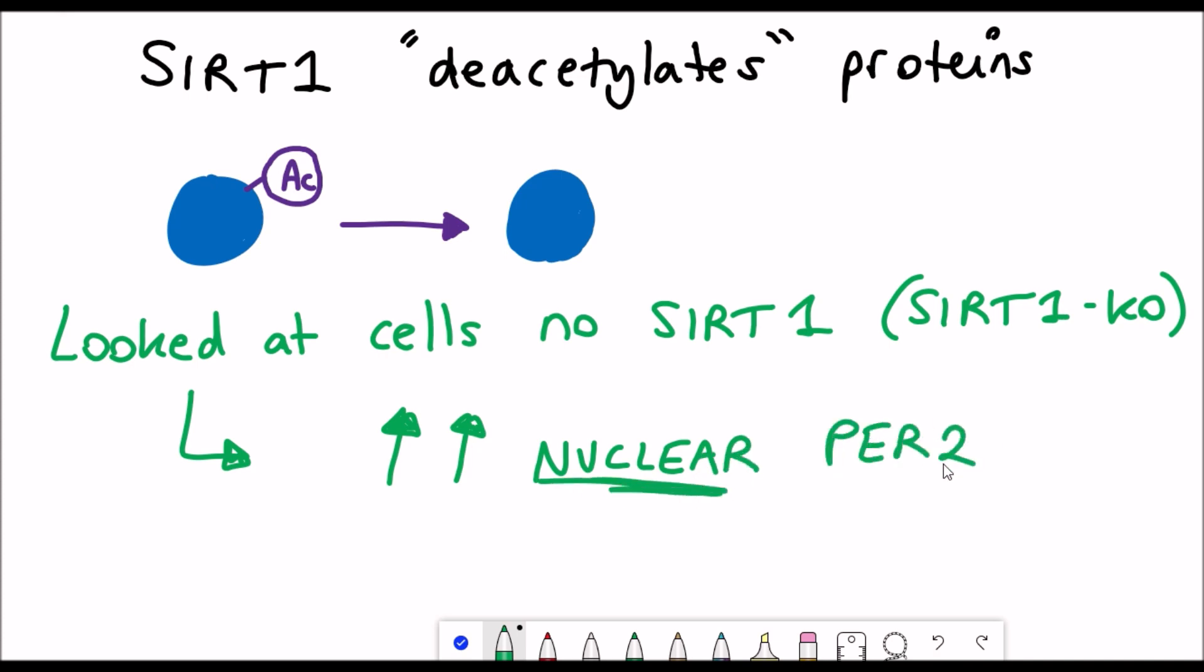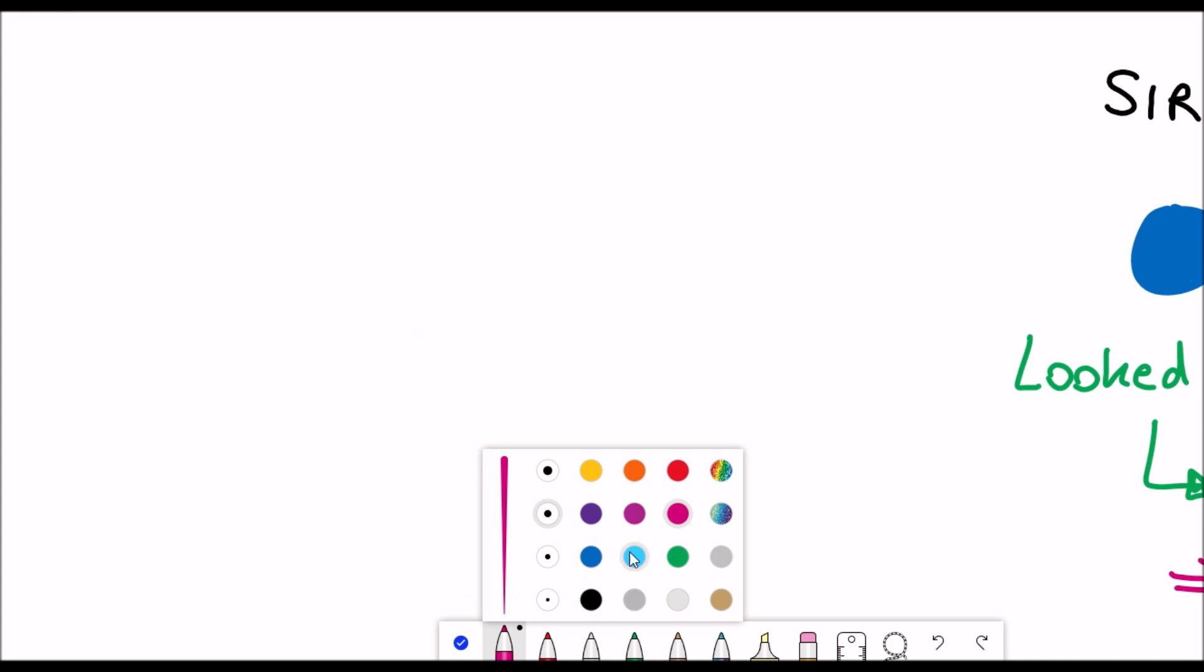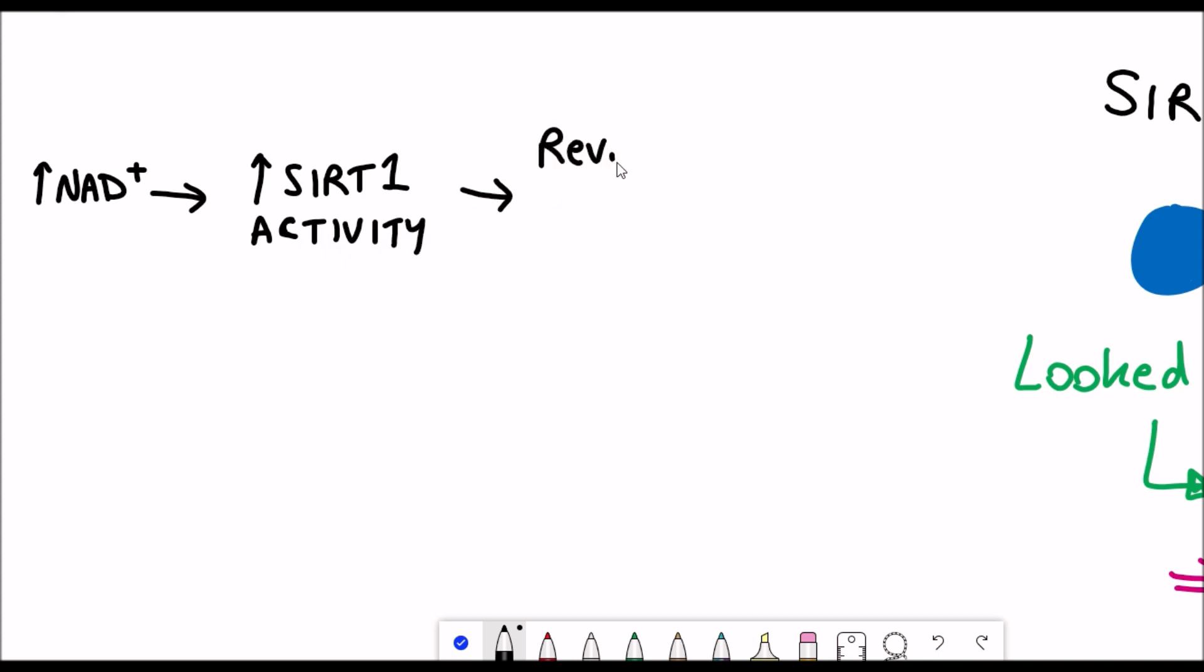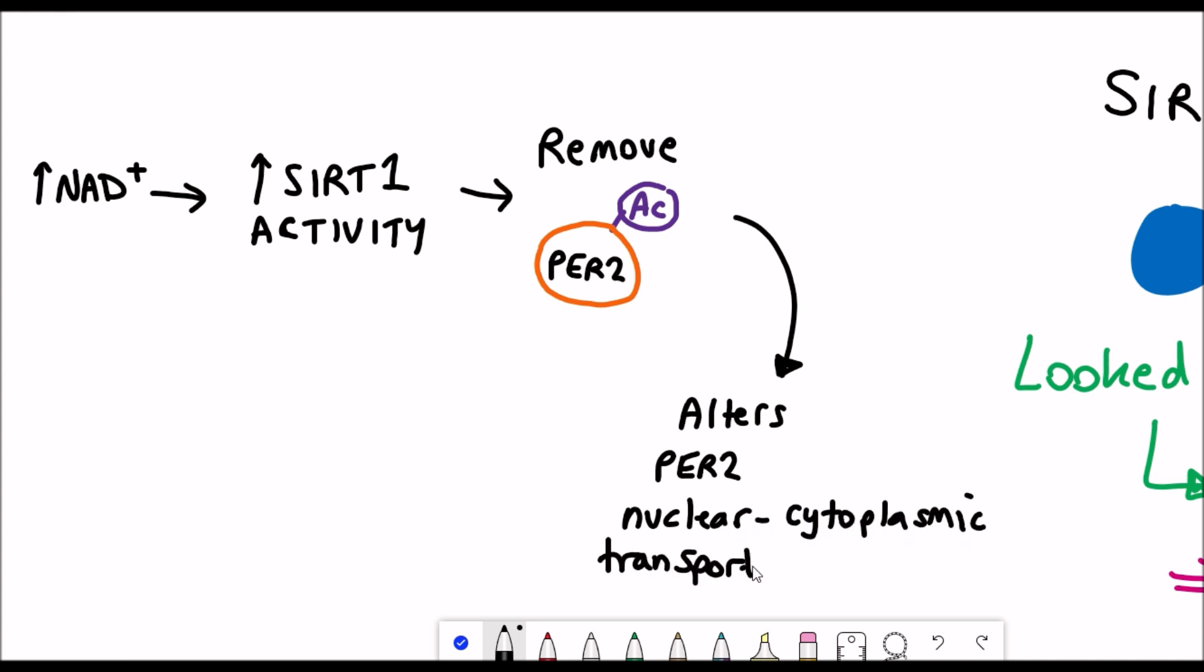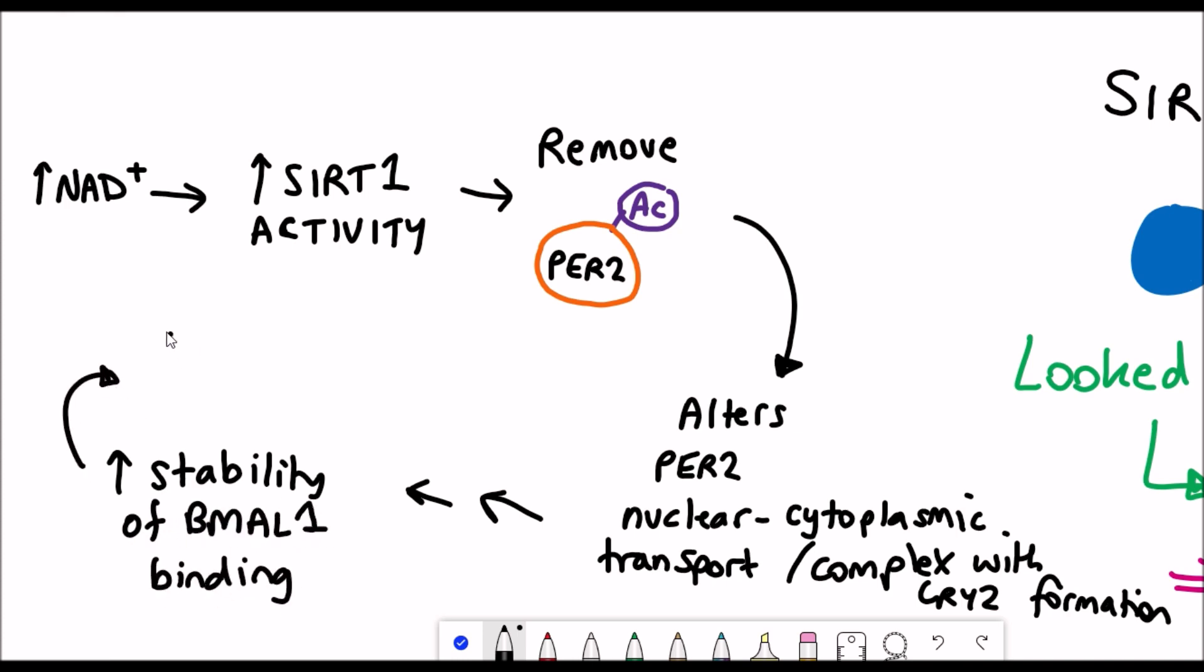In this study, they looked at what happens when they have cells that don't have any SIRT1. What they saw was an increase in the levels of nuclear PER2. PER2 is one of these proteins that repress the activity of BMAL1. By having increased levels in the nucleus, it could effectively make it more repressive to BMAL1 activity. To try and summarize this together, increased NAD+ levels can increase the activity of SIRT1 that depends on NAD+. It can then remove an acetyl group from PER2, and this somehow alters its location within the cell and/or its interactions. But the main message is that this repression of PER2 enables the increased activity of BMAL1, and that causes the circadian reprogramming.